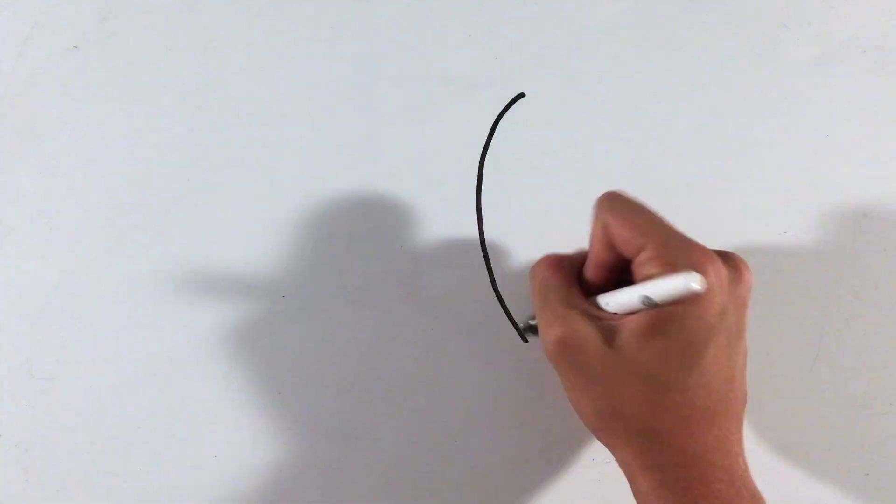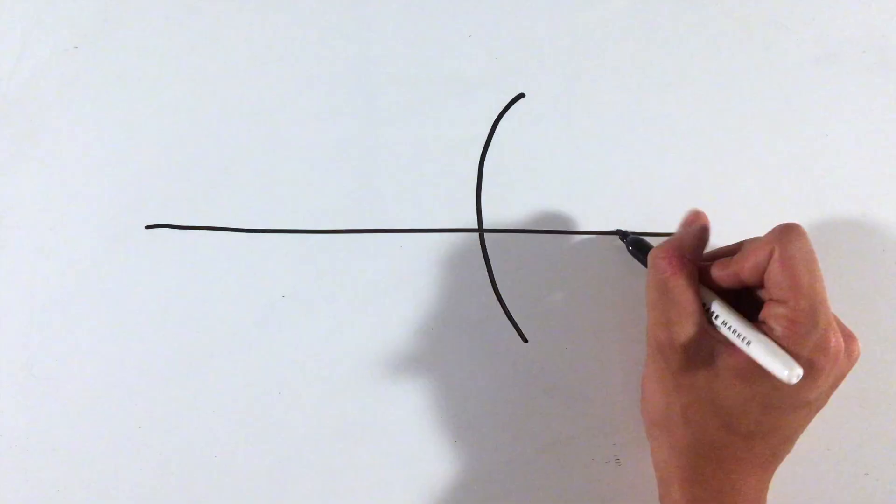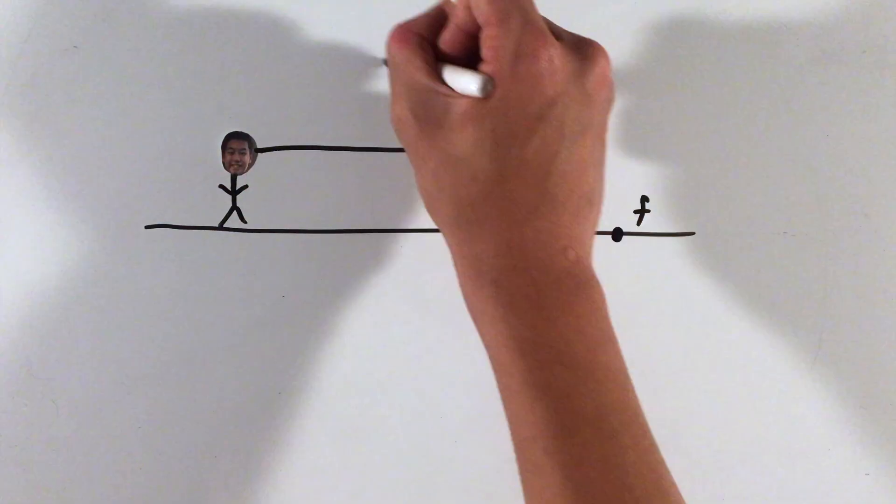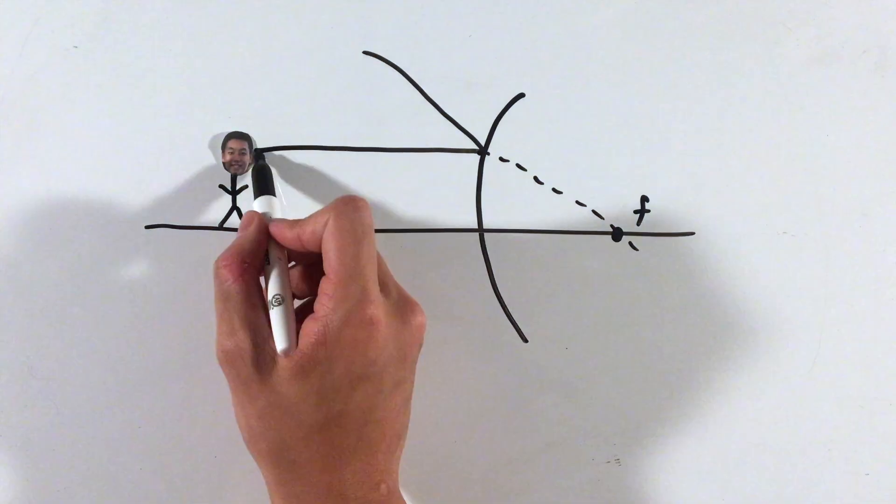Now, sometimes, like with this convex mirror here, following our ray diagramming process, one line parallel that reflects through the focus, and another line that aims towards the focus then reflects parallel, produces two rays that diverge, or never meet at one point.